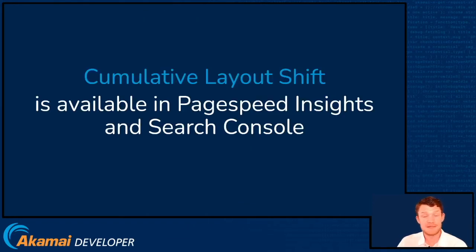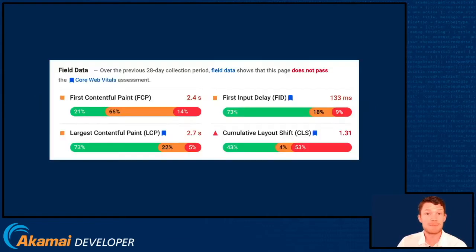Cumulative Layout Shift scores are currently available in PageSpeed Insights, Google Search Console, and a host of other third-party as well as Google tools. In PageSpeed Insights, you'll see it under the Field Data, here in the bottom right-hand corner, with a couple of values.